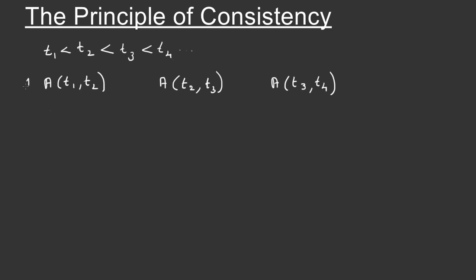Let us consider this as person 1. Let a second person invest at time T1 and withdraw only at time T4. If any of these persons gains something due to the course of action, then that market is inconsistent. So, if the market is consistent, then these proceeds should not depend on the course of action taken by the investor.